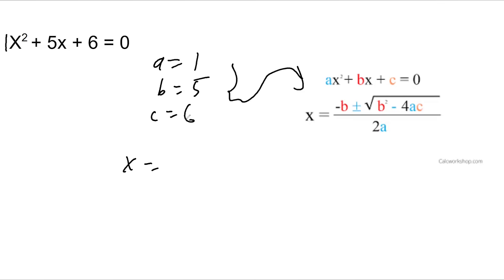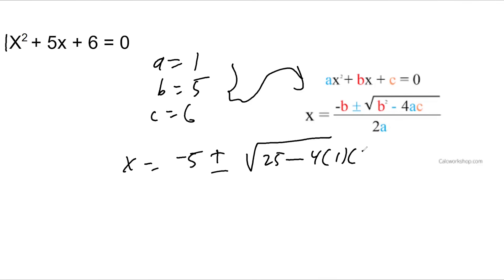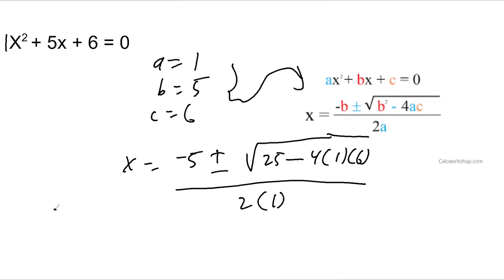So x is going to equal negative b — negative 5 — plus or minus the square root of b squared. I'll go ahead and square the 5, so five squared is 25, minus 4 times a (1) times c (6). That's all over 2a, which is two times 1. Now I need to simplify: I get negative 5 plus or minus the square root of 25 minus 4 times 1 times 6, which is 24, all over 2.